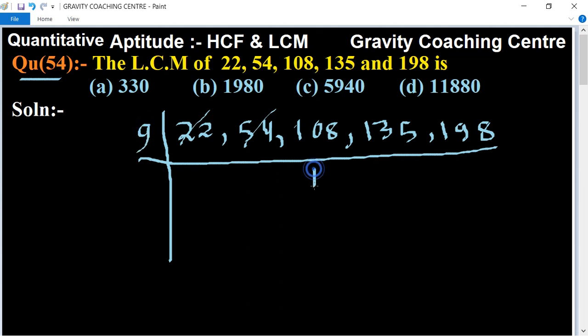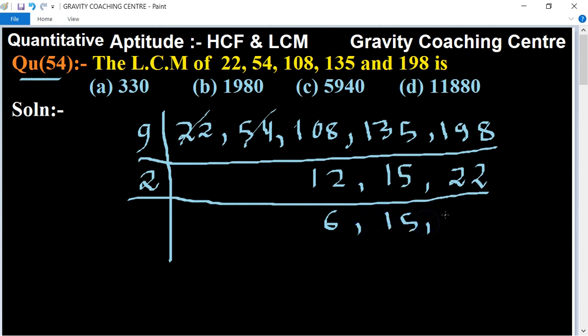After dividing by 9: 12 and 15 and 22. Now take 2. We get 6, 15 and 11. And table of 3.